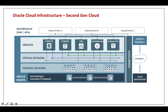Inside the Oracle region, beyond the ADs, there is a physical network. Oracle has designed what they call a non-oversubscribed network, meaning clients get predictable performance. That's why Oracle signs SLAs — when you sign a contract, Oracle specifies the performance you'll receive, and if they fail to deliver, you can charge a penalty back to them. This non-oversubscribed network provides up to 25 gigabits per second bandwidth between hosts on the physical network.